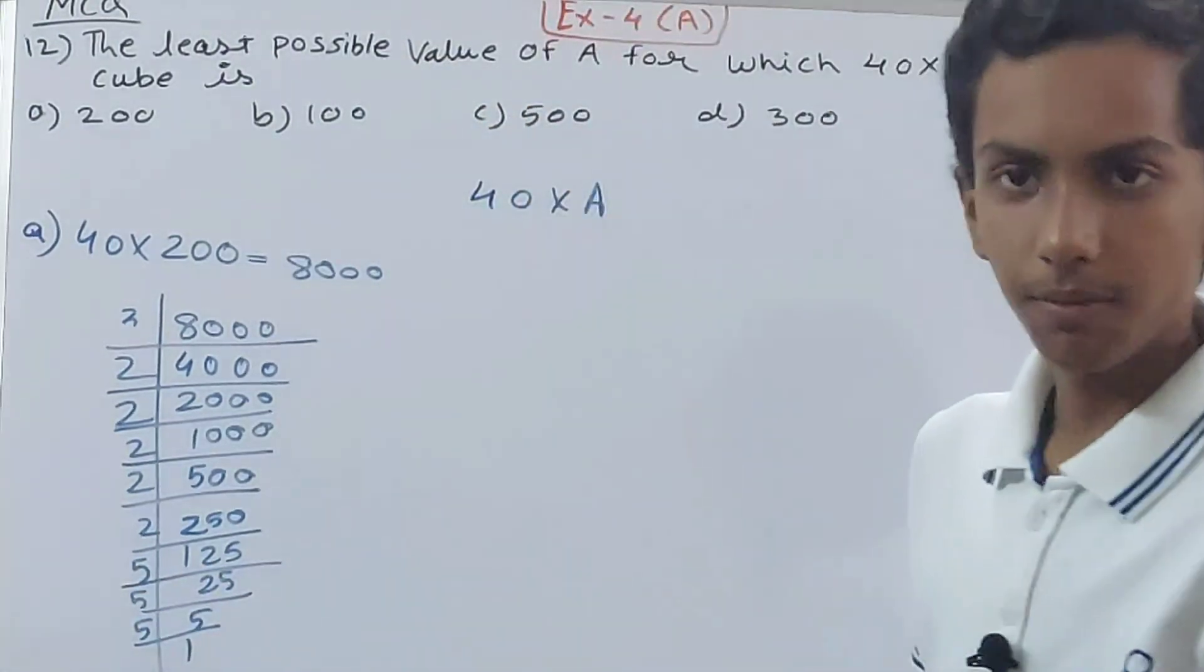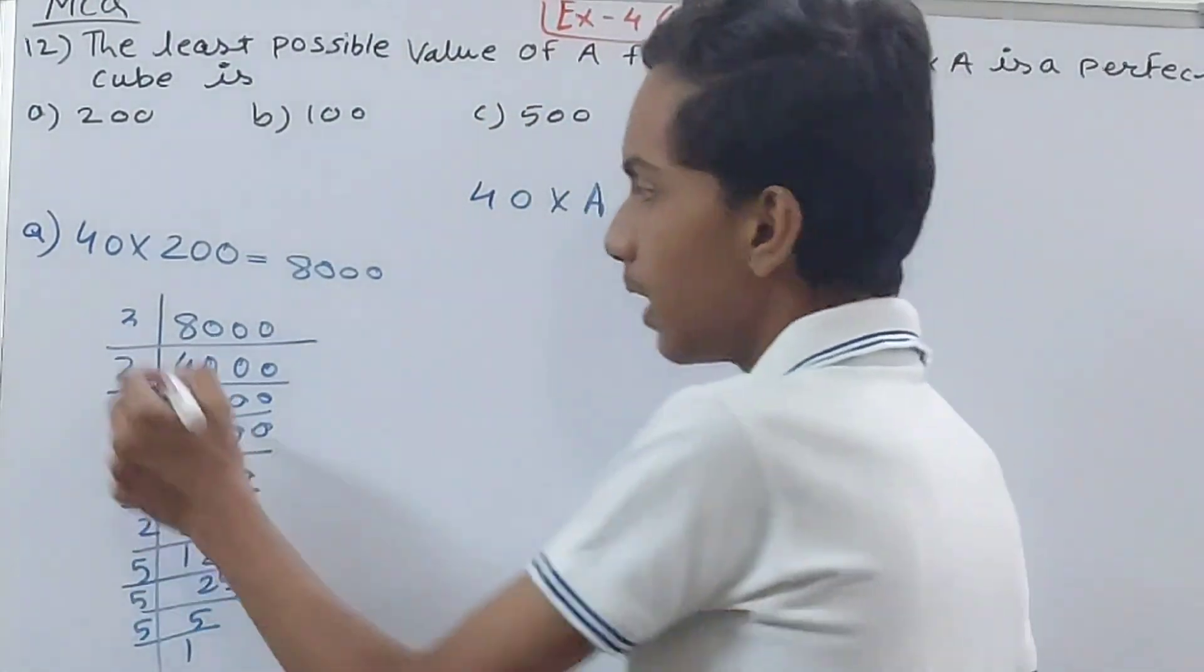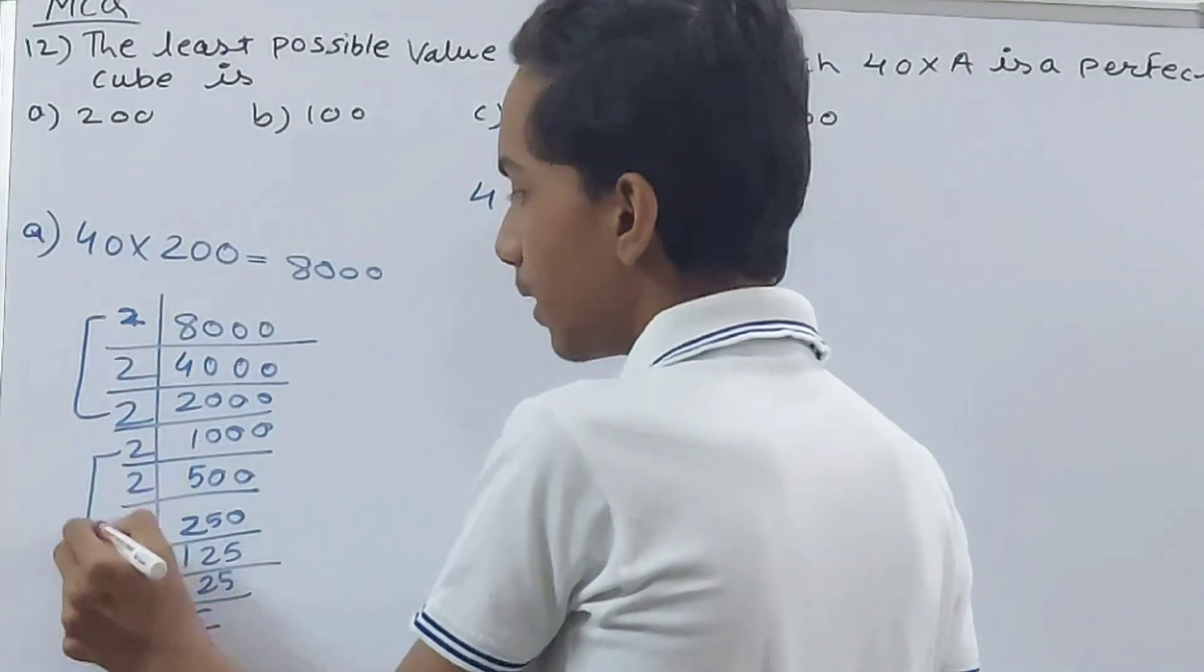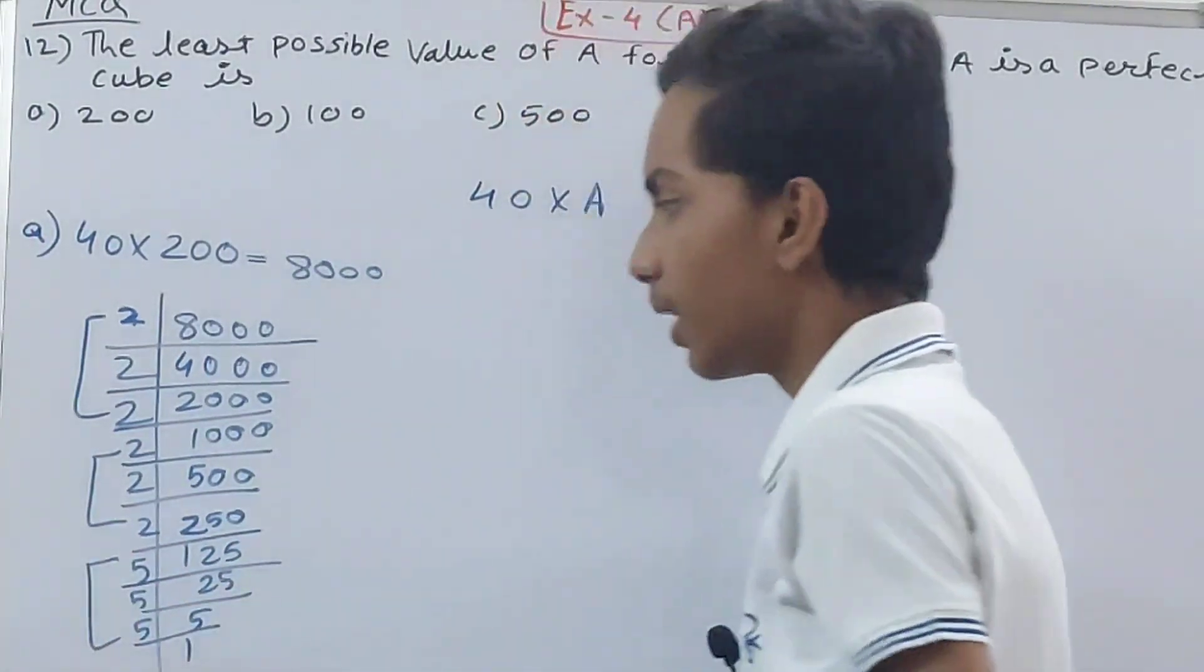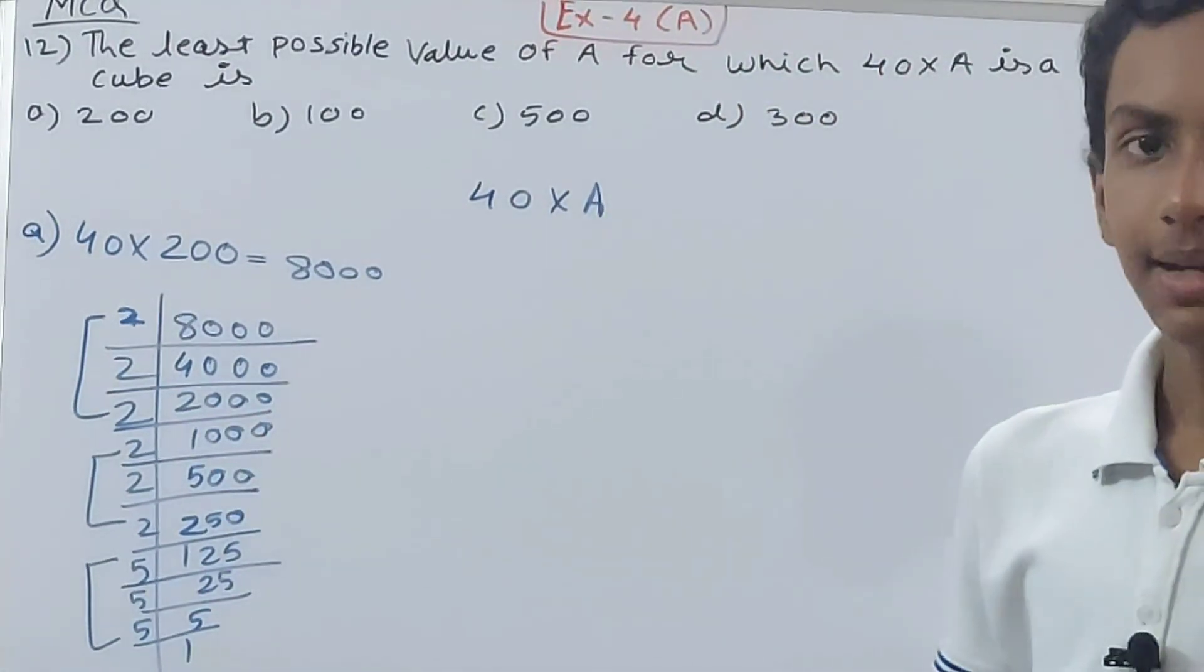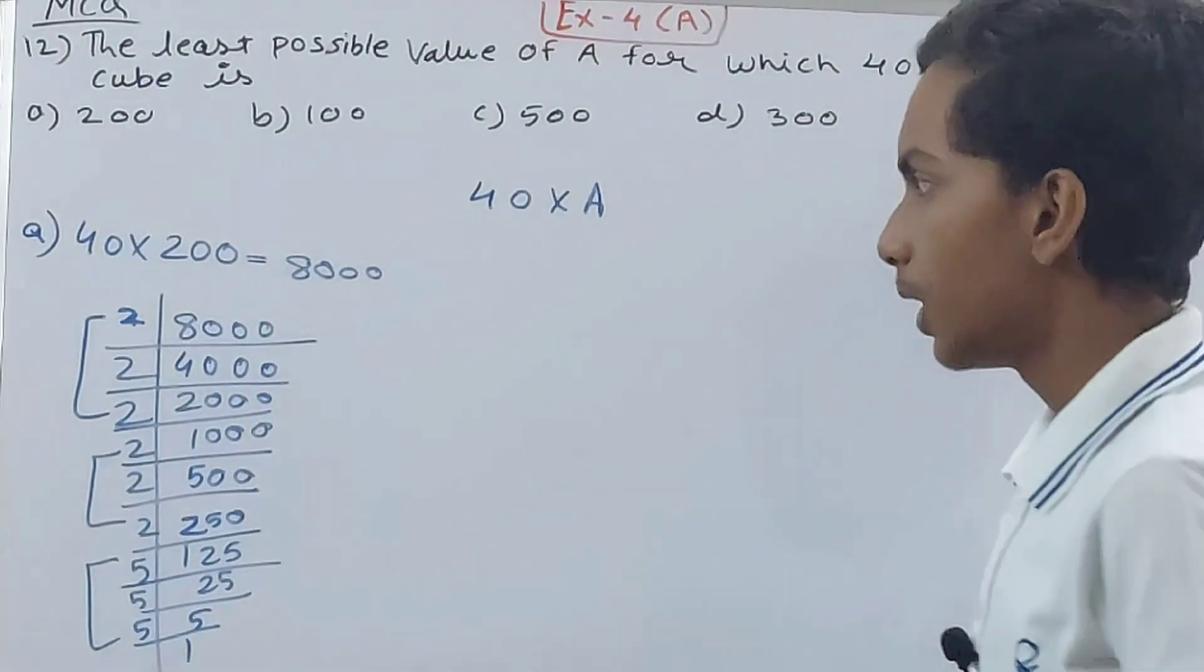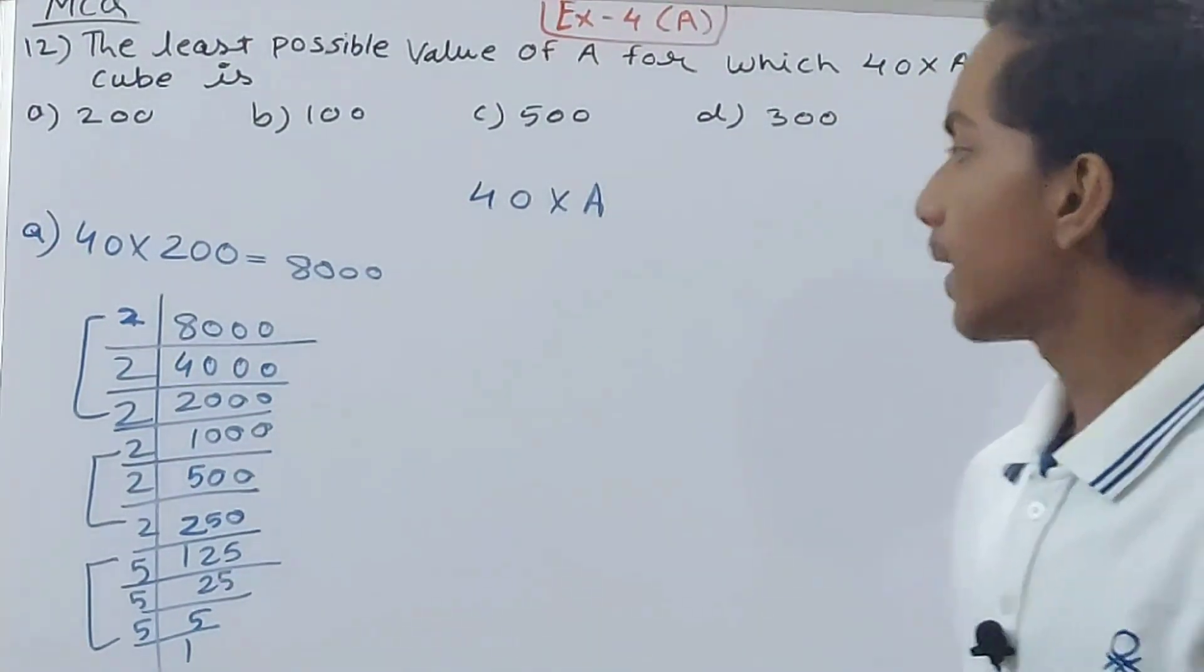So you can see we have factorized it, and if I make these triplets, this is one triplet of 2, another triplet of 2, another triplet of 5. 2 into 2 into 5, that means 5 into 2 is 10, and into 2 is 20. 20 is the cube root, so that means it's a perfect cube.